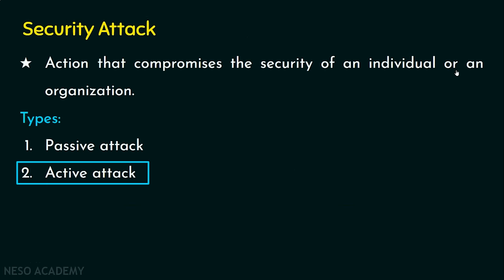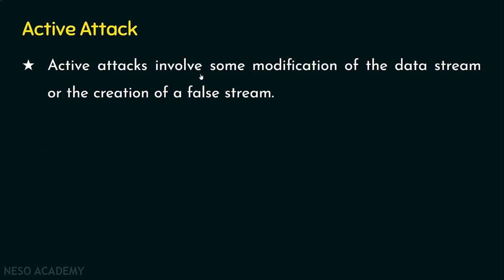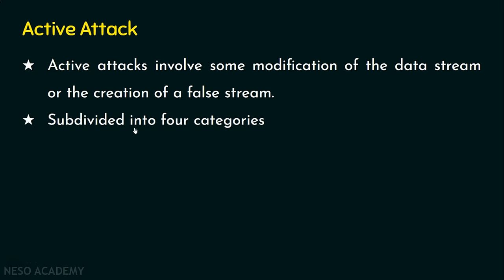Now let's move on to active attack. In passive attack, there is no modification of messages — just reading. Whereas in active attack, there is some modification of data streams or the creation of a false data stream. Active attacks involve modification of messages or insertion of a new or false data stream into the network. Active attack is subdivided into four categories: masquerade, replay, modification of messages, and denial of service.